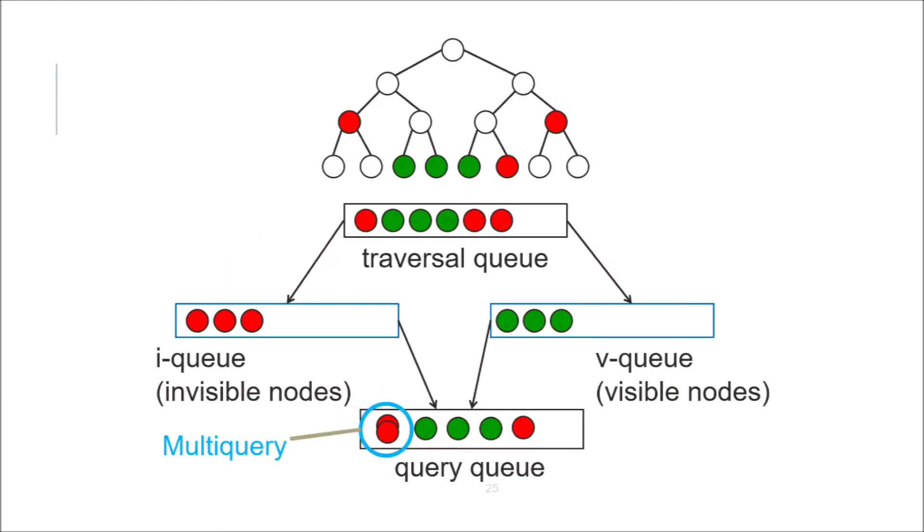So we discussed a lot of different queues. This image shows all the different types of queues used within CHC++. And you can see the two new ones, the IQ for previously invisible nodes and the VQ for previously visible nodes. And as you can also see, we have a multi-query for the previously invisible nodes in the query queue. So this kind of just wraps up everything that we just talked about.